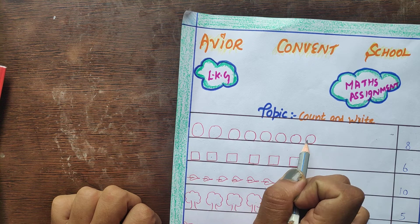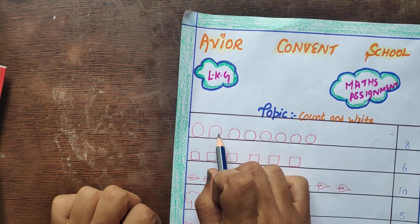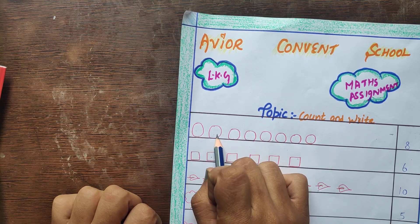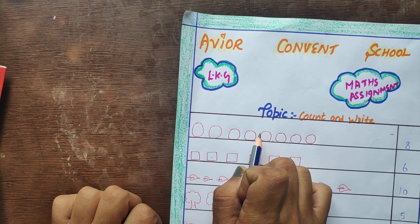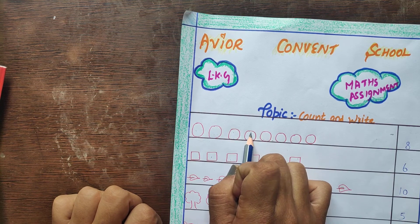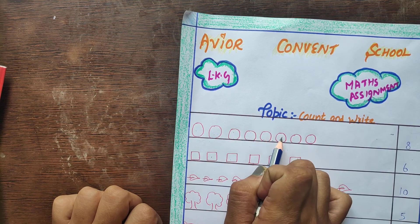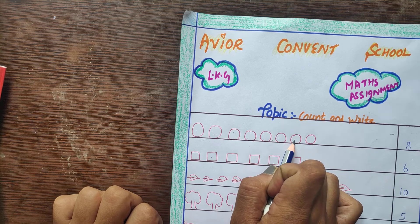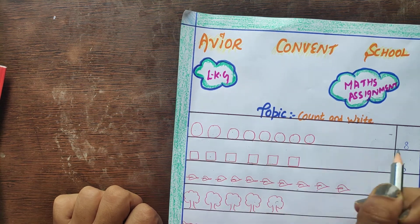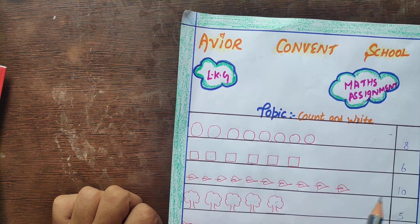Count it again. 1, 2, 3, 4, 5, 6, 7, 8. Write down 8 in your box.